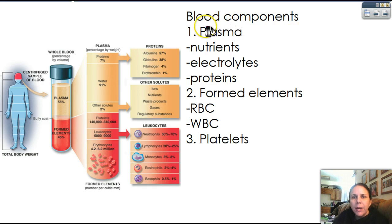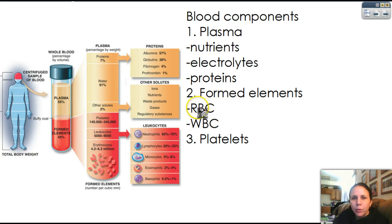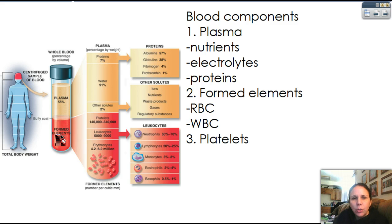So blood is made out of three main things: plasma, the formed elements, and platelets. Platelets don't really fall under either of those categories, so we're going to treat it as its own separate little thing. So the plasma contains three main categories of items: nutrients, electrolytes, and proteins, which we'll look at in just a moment. The formed elements, the cellular components, include RBCs, which is shorthand for red blood cells, and WBCs, or white blood cells. And then the third component of blood is platelets. Now we talked already about a hematocrit, which is a way to separate the blood into its components to see how much of each you have. So down at the bottom, we typically find the red blood cells.